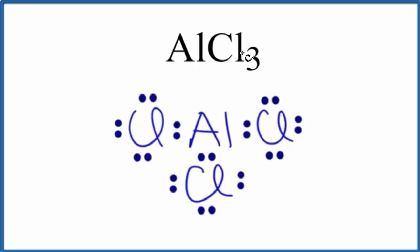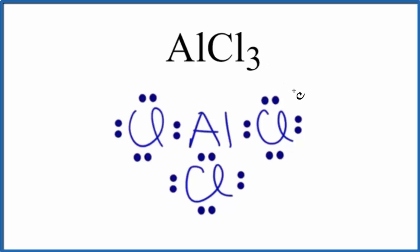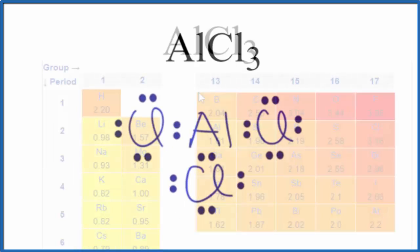The other thing is that aluminum chloride, even though we have a metal bonded to nonmetals, this is considered a covalent compound. So the bonds between the aluminum and the chlorine atoms, we're considering those covalent. To figure out whether it's polar or nonpolar, let's take a look at the difference in electronegativity between the aluminum and chlorine.